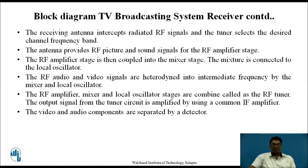The output signal from the tuner circuit is amplified by using a common IF amplifier. The video and audio components are separated by using a detector, because video signals generally contain higher frequency signals and audio contains lower frequency signals. After separation, the video signals are demodulated by using an AM demodulator and audio components are demodulated by using an FM demodulator.